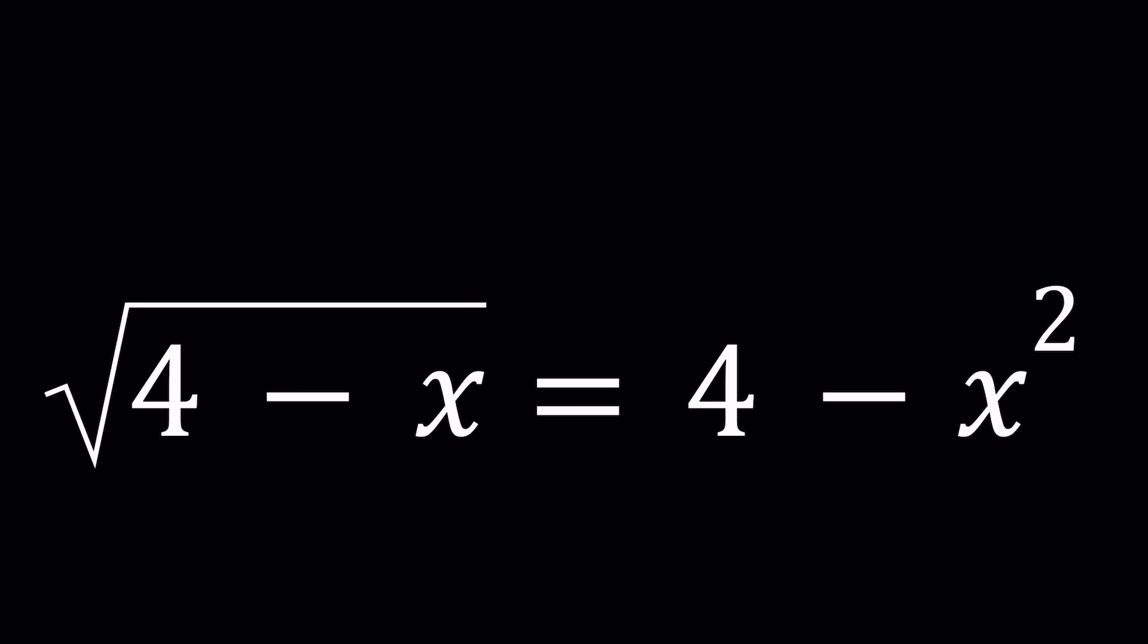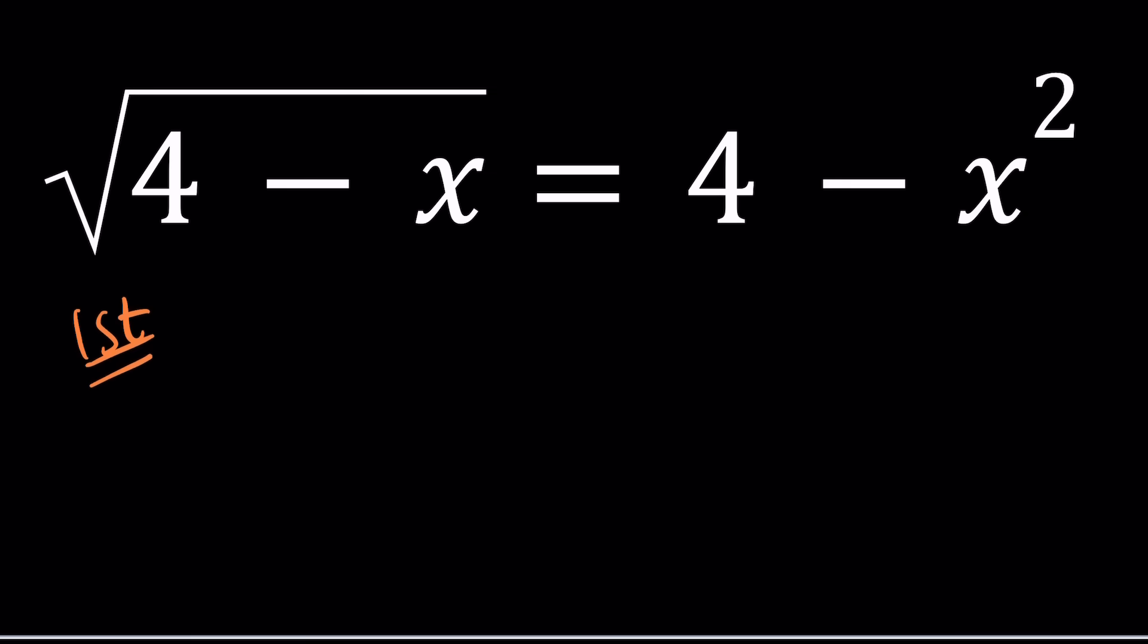So let's go ahead and see how we can solve this problem in two ways. Let's start with the first method. For my first method, I'm going to go ahead and just do what we should normally do, which is getting rid of the radical by squaring both sides.